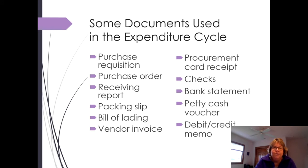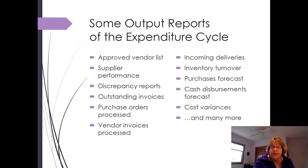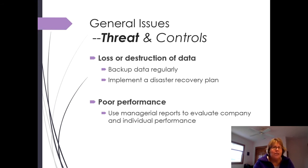Some of the documents we use here — most of these you have seen. We'll talk about a purchase requisition in a minute. A procurement card is basically a credit card bill or receipt. We're going to skip talking about petty cash because it's really not used anymore. One of the output things is an approved vendor list. Many of these reports you've seen in your managerial or cost accounting class. This slide about general threats and controls with master data, sensitive information, loss of data, and performance should look familiar — since we talked about those in chapter eight, we're going to skip ahead.